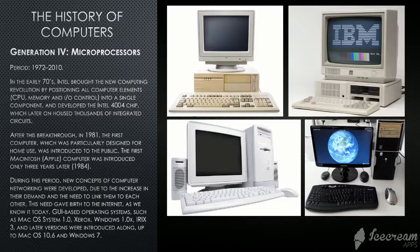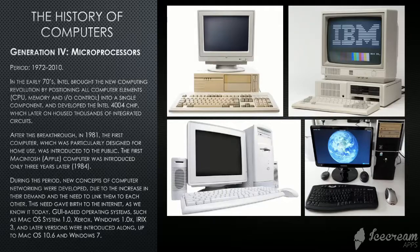Generation 4: Microprocessors. The period is 1972 to 2010. In the early 70s, Intel brought a new computing revolution by positioning all computer elements — such as the processor, the memory, and the input and output controllers — into a single component, developing the Intel 4004 chip, which later housed thousands of integrated circuits. In 1981, the first computer particularly designed for home use was introduced to the public. The first Macintosh, or Apple computer, was introduced only three years later, in 1984. During this period, new concepts of computer networking were developed due to the increase in demand and the need to link computers to each other, giving birth to the Internet as we know it today.